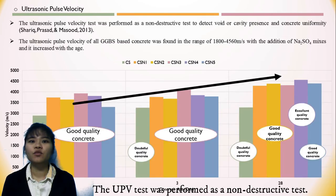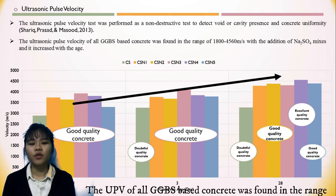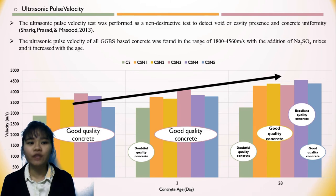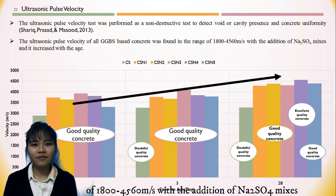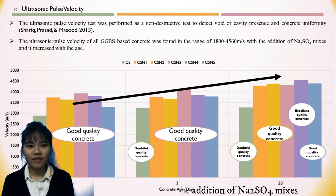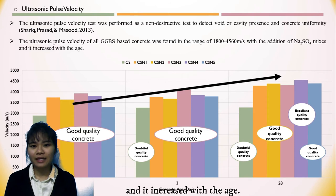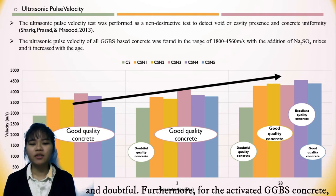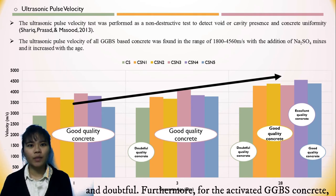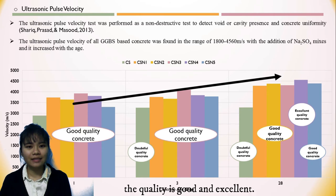The UPV test was performed as a non-destructive test. The UPV of all GGBS-based concrete was found in the range of 1,800 to 4,560 m/s with the additions of sodium sulfate, and it increased with age. The concrete quality of the control specimen is between poor and doubtful, while for the activated GGBS concrete it is good to excellent.